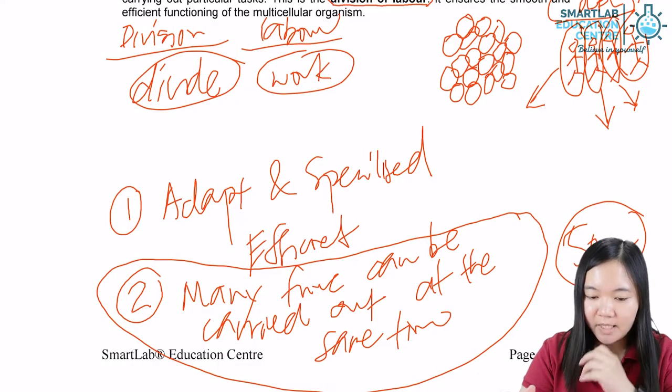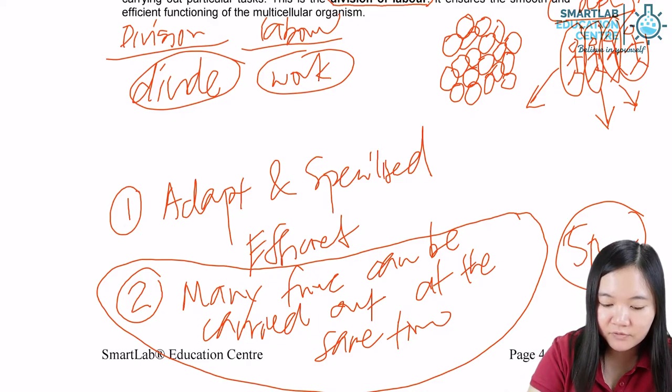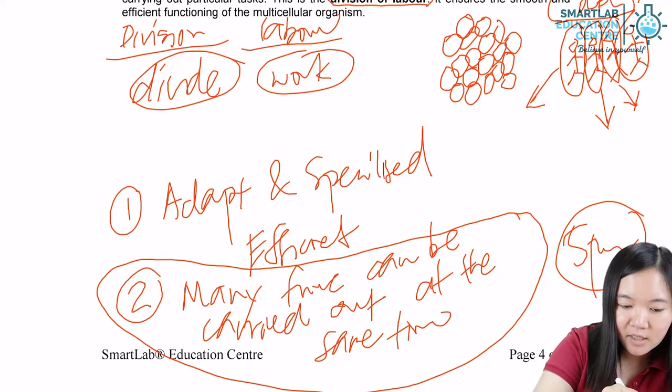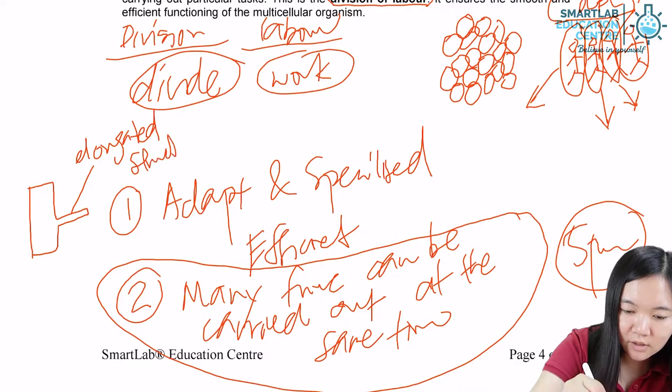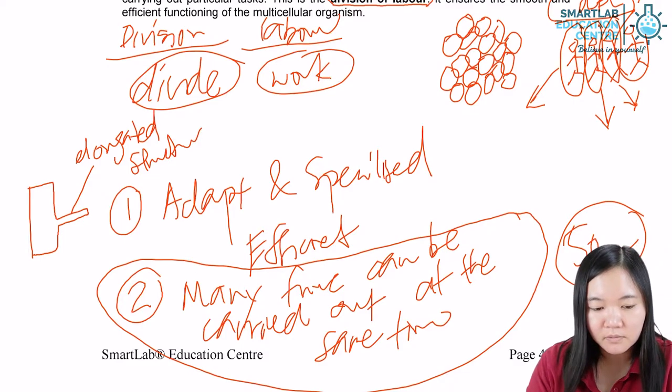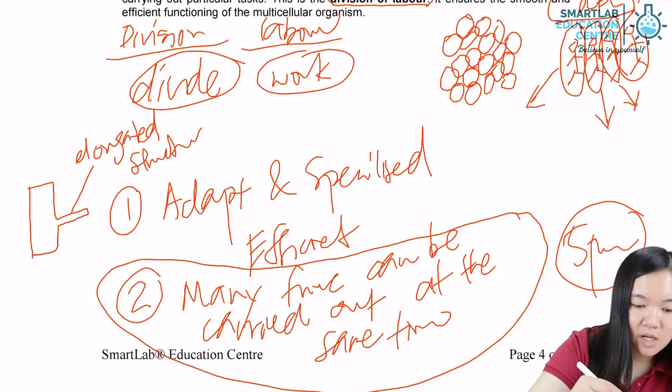So, cells, for example, adapt and specialize. I have, say, I have root hair cell. Root hair cell is very specialized. It has special elongated structure.